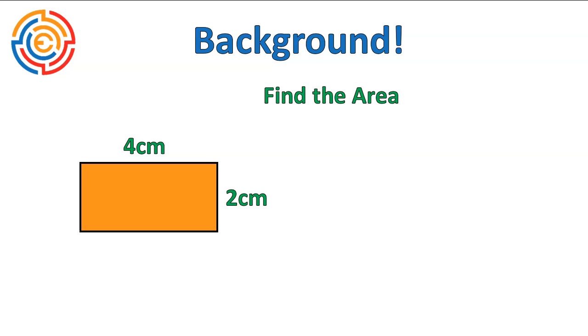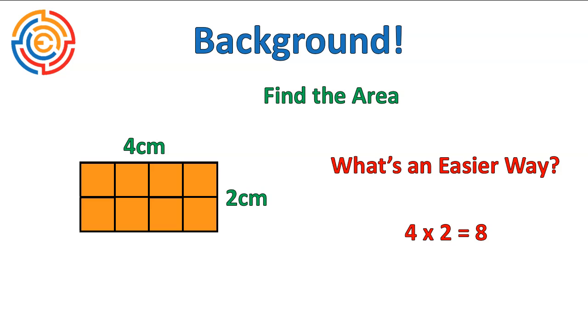So here is a rectangle, and if you're asked to find the area, what you can do is draw in a bunch of squares and count all of them, or you can use the easier way, which is multiplying. 4 times 2, which gives us 8. In other words, area can be found by multiplying.